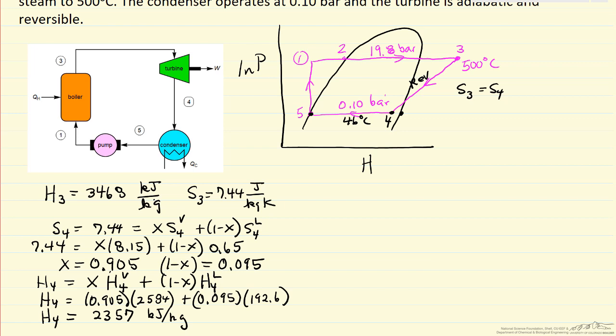I've now calculated H4. We also have H5, which is just the saturated liquid enthalpy at 46°C. Now H1 is the only enthalpy value remaining, and then we can start calculating work and heat.